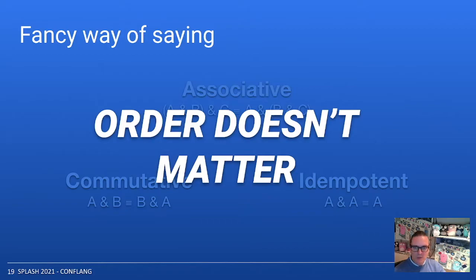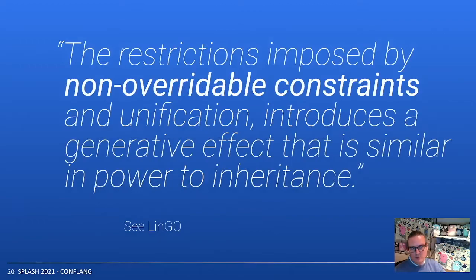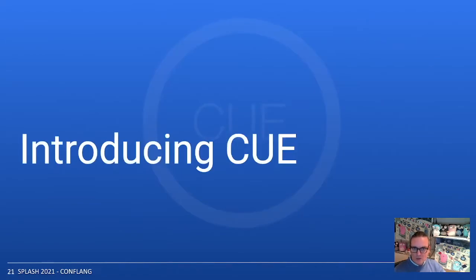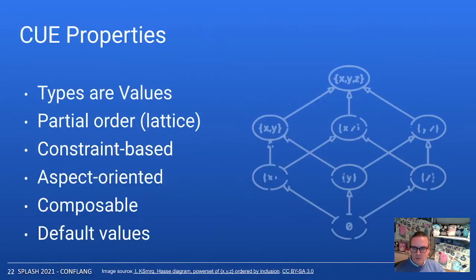Another very cool, well-documented side effect of using unification of typed feature structures is that constraints are both generative — they can be used to derive values — and can serve as validation at the same time. This is a really profound feature that you cannot get when allowing overrides. Now let's see how all of this is used in CUE. One very important property of CUE is that types are values. Both types and values are placed in a partial order — a lattice more specifically. It ends up being constraint-based, aspect-oriented, composable the way Rob Pike meant it to be, and it also has default values to allow for this one level of overrides.